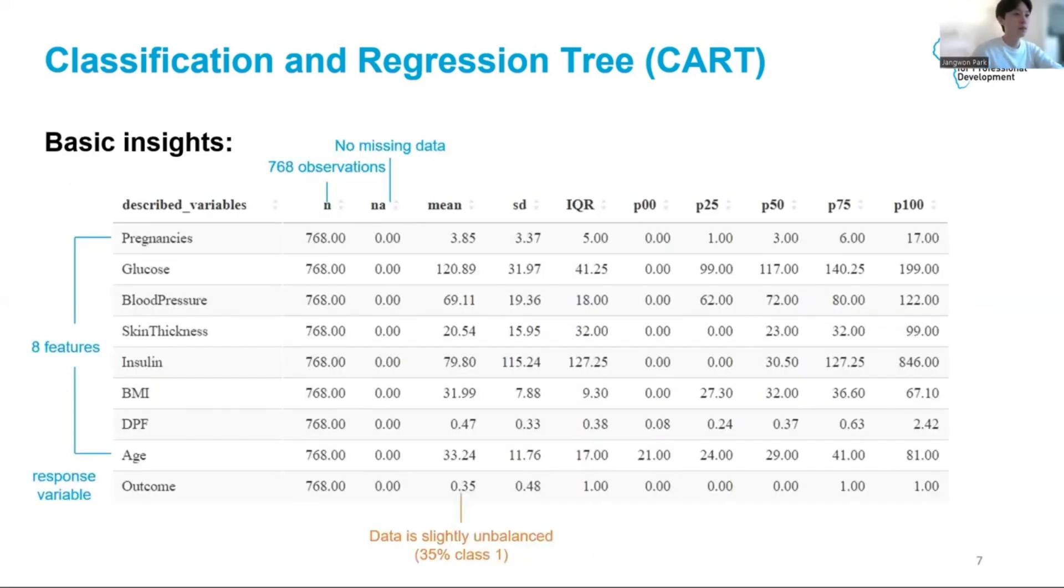In the bottom row of this table, the variable 'outcome' is the response variable that we will try to predict correctly. I will use the term response variable to stay consistent with part one of the machine learning lesson. As a recap, other commonly used terms include target variable or dependent variable. Looking across the bottom row, we notice that the mean is 0.35. Because outcome is a binary variable, the mean in fact tells us the percentage of the data points that is of class one, meaning the percentage of the people in our dataset who are diabetic.